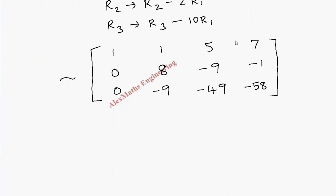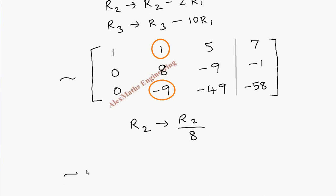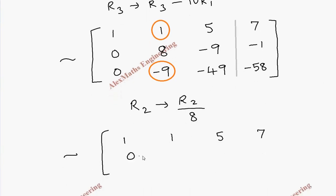We got this augmented matrix and our aim is to convert it into a diagonal matrix. For the next part we need to make two elements zero, but for that I need a 1 in the pivot position — we have 8 there. So first we take row 2 and divide all row 2 elements by 8. Row 1 stays as it is. Row 2 becomes: 0, 1, minus 9/8, minus 1/8.